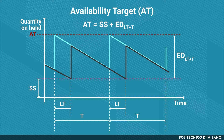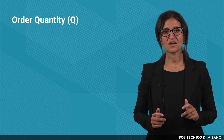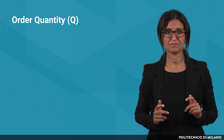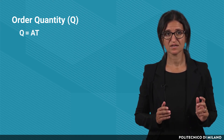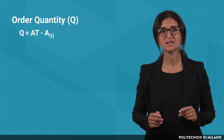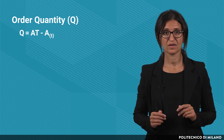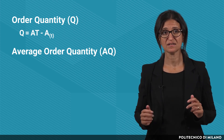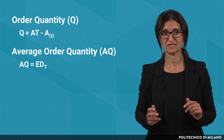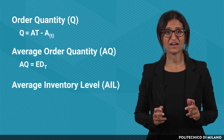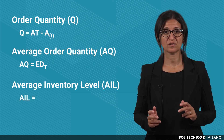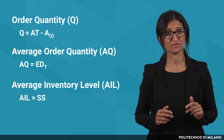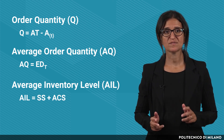This quantity allows indeed meeting the demand during the order interval t and the lead time, assuring a certain service level. Considering the ordered quantity, it is variable and it can be found as the difference between the availability target and the value of the availability at the moment in which the order is issued. As for the average order quantity, since an order is issued every time interval t, it is equal to the expected demand during t. Considering the average inventory level, it is equal to the sum of the average value of the safety stocks and the average value of the cycle stocks.